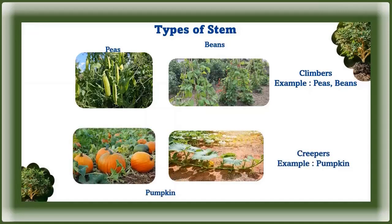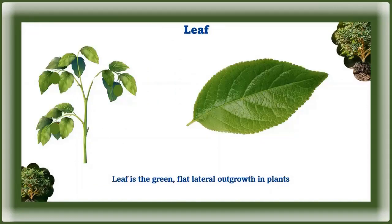A creeper is a plant that grows along the ground by means of extending stems or branches, and produces fiber-like roots that arise from the base of the stem. Example: pumpkin.